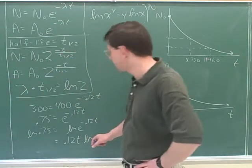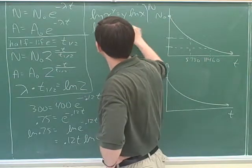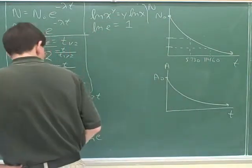Because the natural log is the inverse function of e. Natural log of e are inverse functions. So ln .75 equals negative 0.12t. That's right.